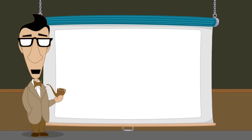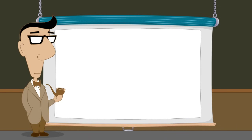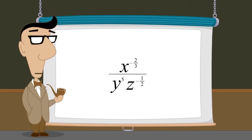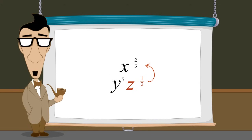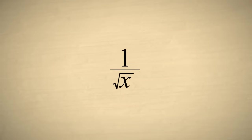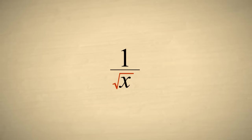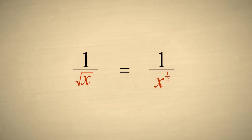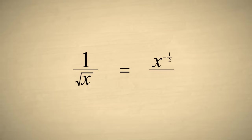Rational exponents follow all the same rules we already know for integer exponents. For example, in an expression written as a fraction, we can move the exponential terms from the denominator to the numerator, or from the numerator to the denominator, as long as we switch the sign of its exponent. As an example, let's say that we want to write an expression one over the square root of x without using a radical sign. We can eliminate the radical sign by writing the square root of x as x to the one-half power. But then we can simplify this expression further by moving the x-term from the denominator to the numerator and switching the sign of the exponent. So one over the square root of x can be written as x to the negative one-half power.